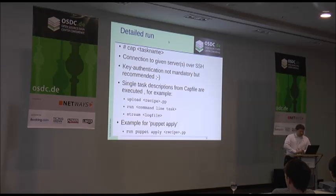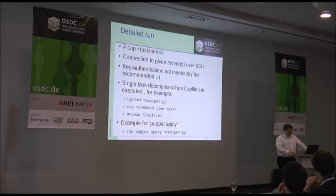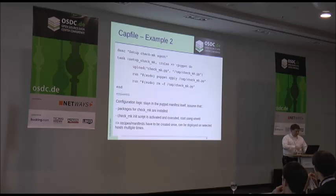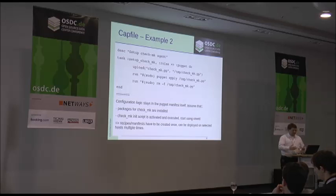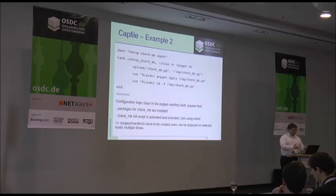There are some more functionalities because you can also stream log files back, which can be useful if you want to save some information from the Puppet runs. The Puppet apply we already have seen. This is another example for the checkmk agent, where we again copy over with the upload functionality of Capistrano the checkmk file, run puppet-apply, and the logic itself about how checkmk should behave and should be configured is not in the Capistrano file but in the Puppet recipes, obviously.